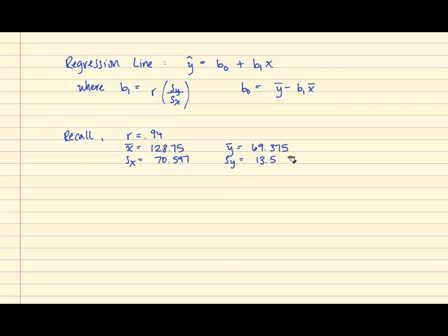So, in order to determine b1, which is the slope, we're going to plug the values into the formula. So we'll have .94 times the quantity of 13.5 over 70.597. We're going to simplify what's inside of the parentheses first, and that gives us .19123. Once we multiply, we obtain .1798.